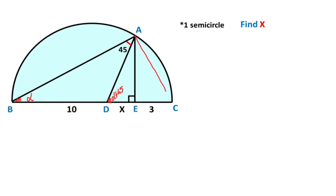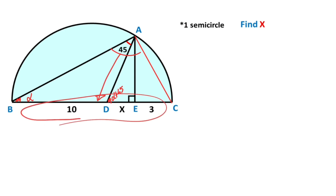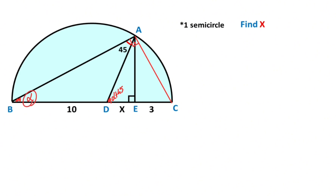After that, if we connect these two points, if you focus on this triangle, notice that there's a diameter as the side of angle BAC. So angle BAC must be equal to 90 degrees. Then if there's alpha here, the remaining angle must equal 90 minus alpha degrees.